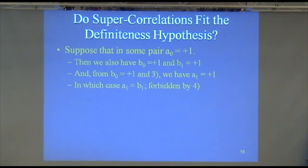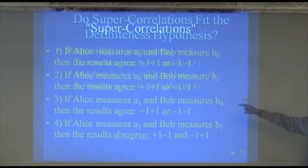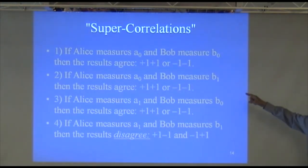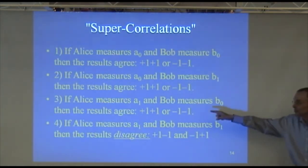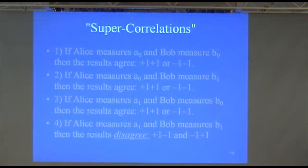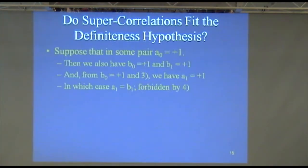Rule 4 from the previous slide said that can't happen. Well, we just figured out that in the case we were looking at, Bob would have to have plus 1 for B0. That means Alice would have to have plus 1 for A1. And now we've got a problem. Because Rule 4 says you can't have agreement in the A1, B1 case.